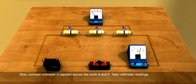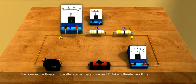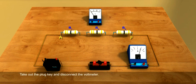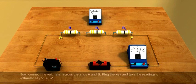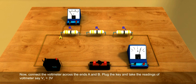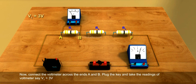Now connect the voltmeter in parallel across the ends A and F. Take voltmeter readings. Take out the plug key and disconnect the voltmeter. Now connect the voltmeter across the ends A and B. Plug the key and take the readings of voltmeter. Say V1 equals 3 volts.